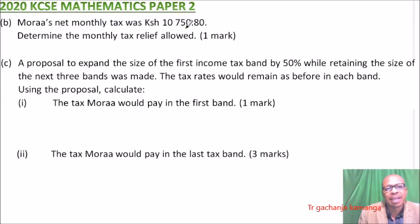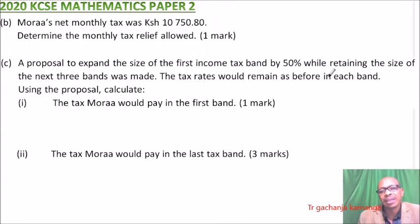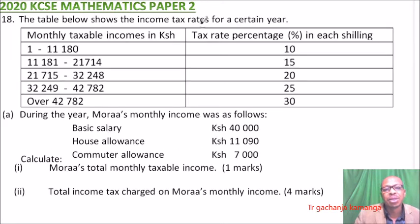Part B also tells us Morales' net monthly tax was 10,750 and 80 cents, and we need to determine the monthly tax relief. Part C involves a proposal to expand the first income tax bracket by 50 percent while retaining the size of the next three bands, with tax rates remaining the same in each band. This is from commercial arithmetic done in form three.